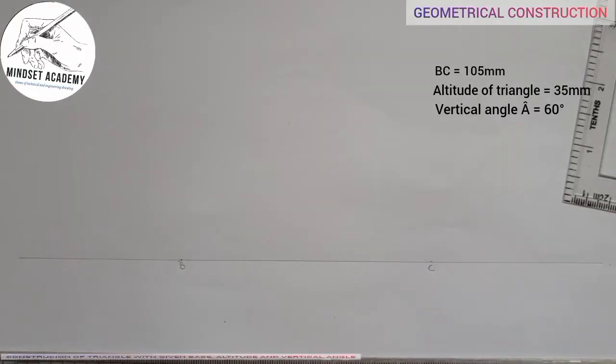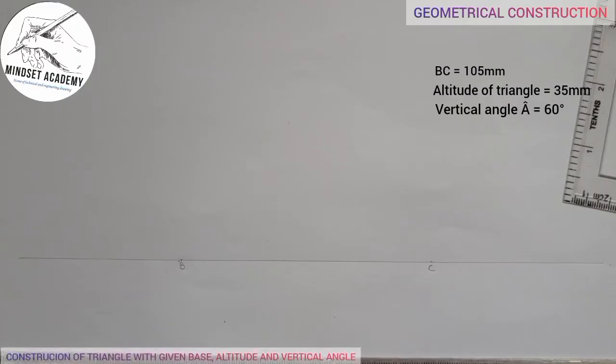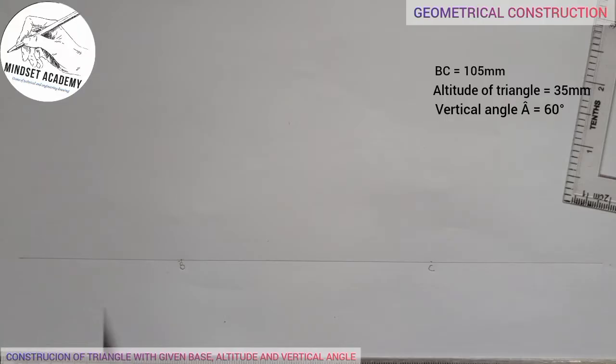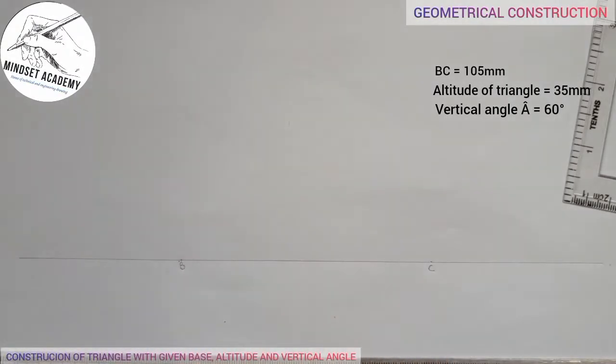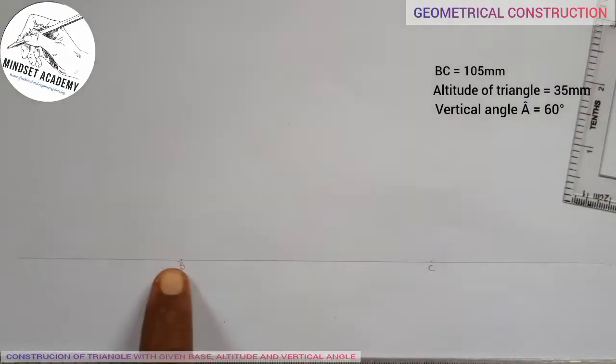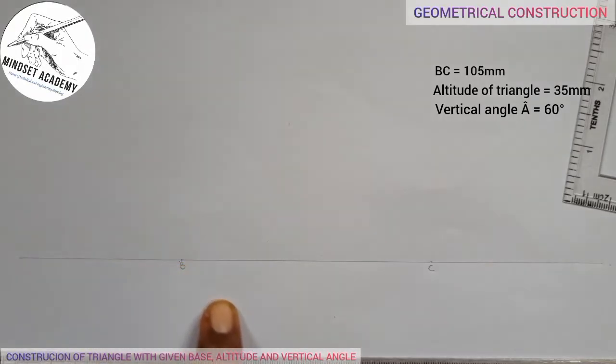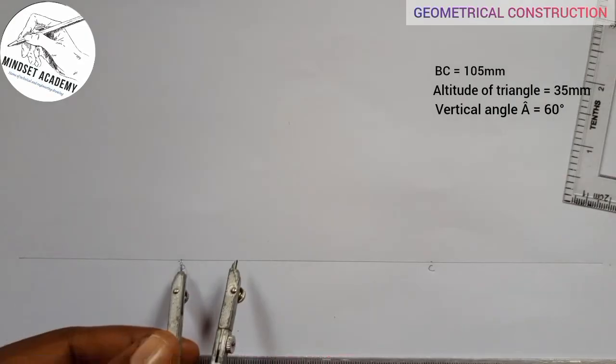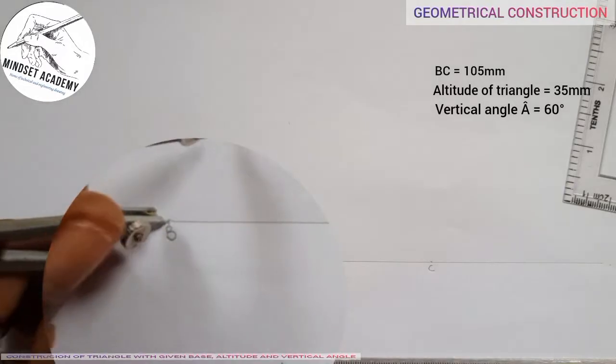The next thing is, since we are told that the vertical angle is 60 degree, that means the vertical angle will be on point A. Since this is B and C, point A will be somewhere around here. Now, what we'll do here is this: I'm going to construct an angle at this point B at an angle of 60 degree. Taking my meter rule, I'll place it at B at any given radius.